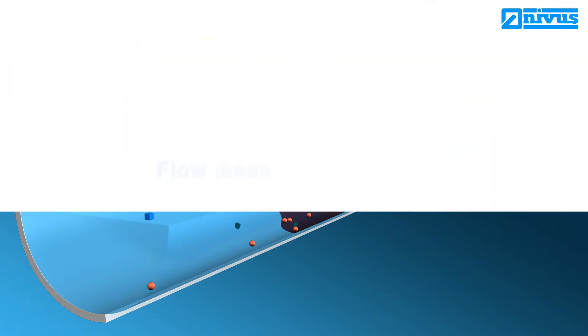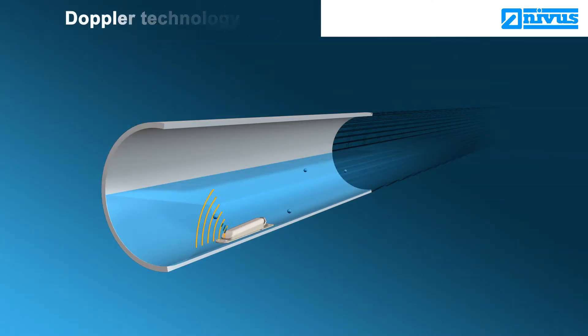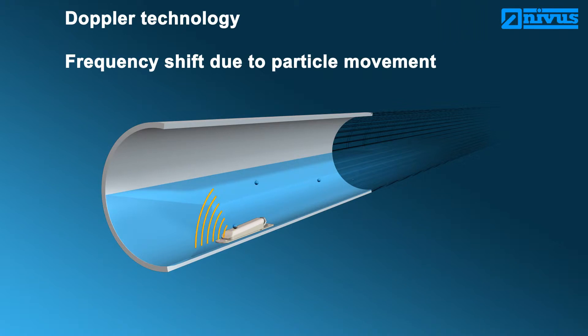Flow measurement using Doppler systems. The Doppler technology uses a sensor continuously transmitting ultrasonic signals at a constant frequency. The particles contained in the medium reflect the signal. The particle movement shifts the frequency of the reflected signal.